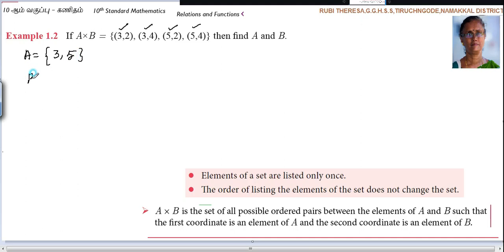Then set B. Set B is what? The second coordinates. Let me change the color. 2, 4, 2, 4. But how many times you have to write 2? Only one time. 4 only one time. So 2 comma 4.